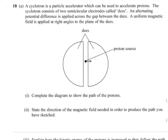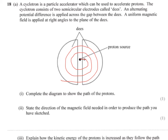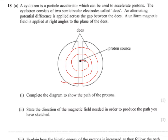First of all, the proton source has been drawn in the upper half of the diagram. So we have to assume that the protons are going to spiral clockwise. Our job is to add the path of the protons as they make their way around here, spiralling out. You might want to put a direction on this so we can tell which way they're crossing the D's.